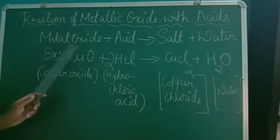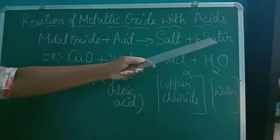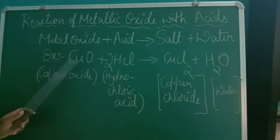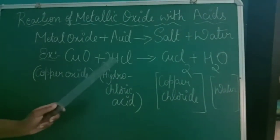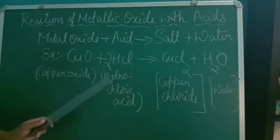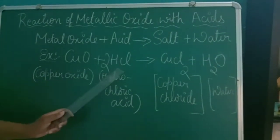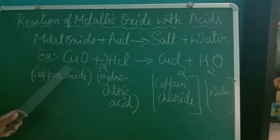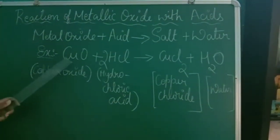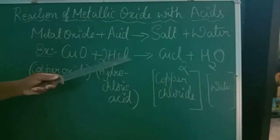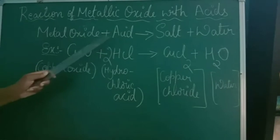When we react metal oxide with an acid, we obtain two different products — that is salt as well as water. By taking a small example: copper oxide, that is CuO, reacts with HCl, wherein HCl is hydrochloric acid. When copper oxide is reacting with hydrochloric acid, this copper combines with the Cl to form copper chloride, plus this hydrogen combines with this oxygen.